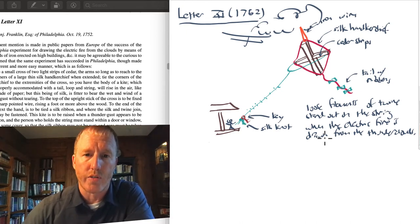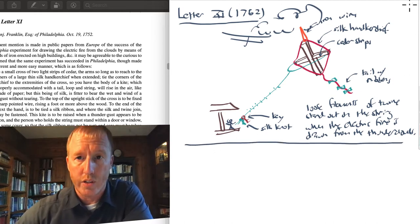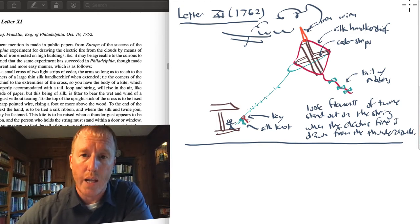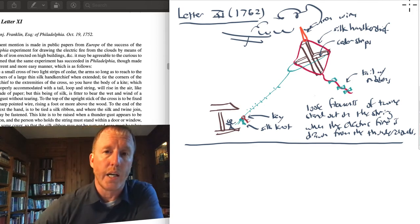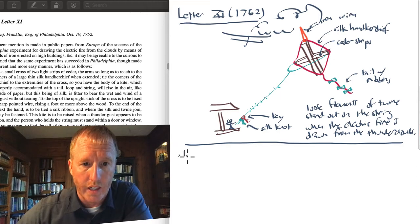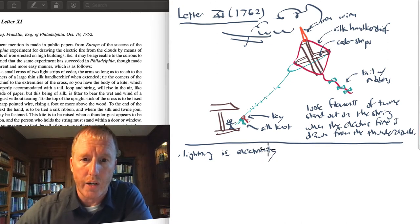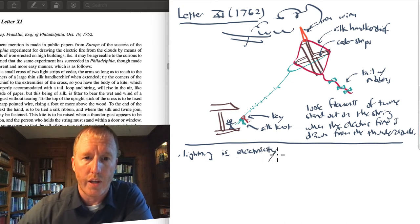And one of the main results of this experiment is that Franklin recognized that the electricity that forms, well, the lightning that we see in the sky is the same kind of electricity as what he had been generating in his laboratory. In other words, lightning is, just is, electricity. This might seem obvious to you, but it was not at all obvious to early thinkers about this.